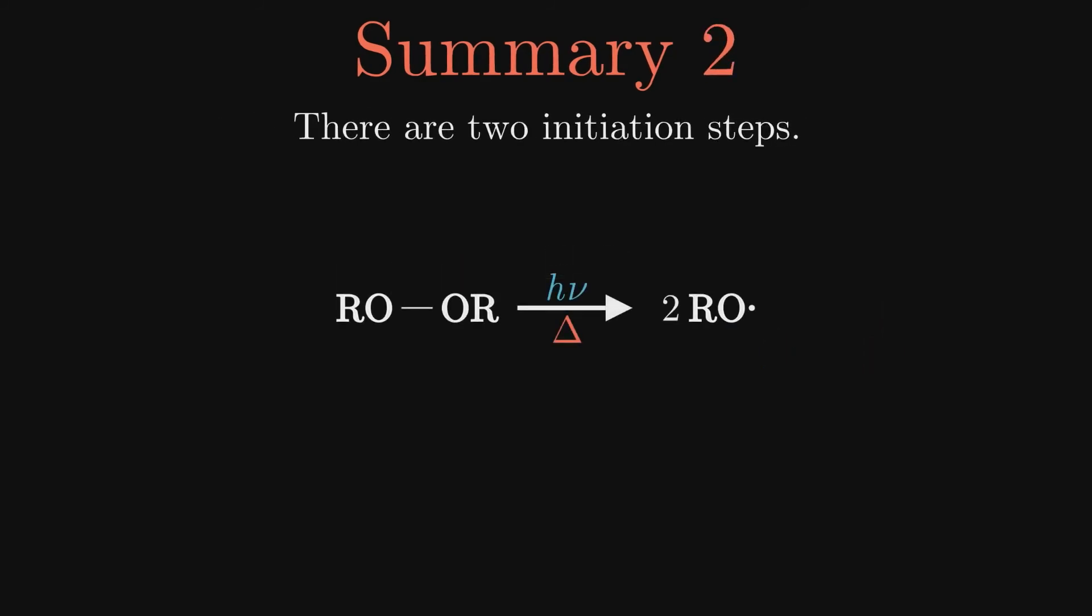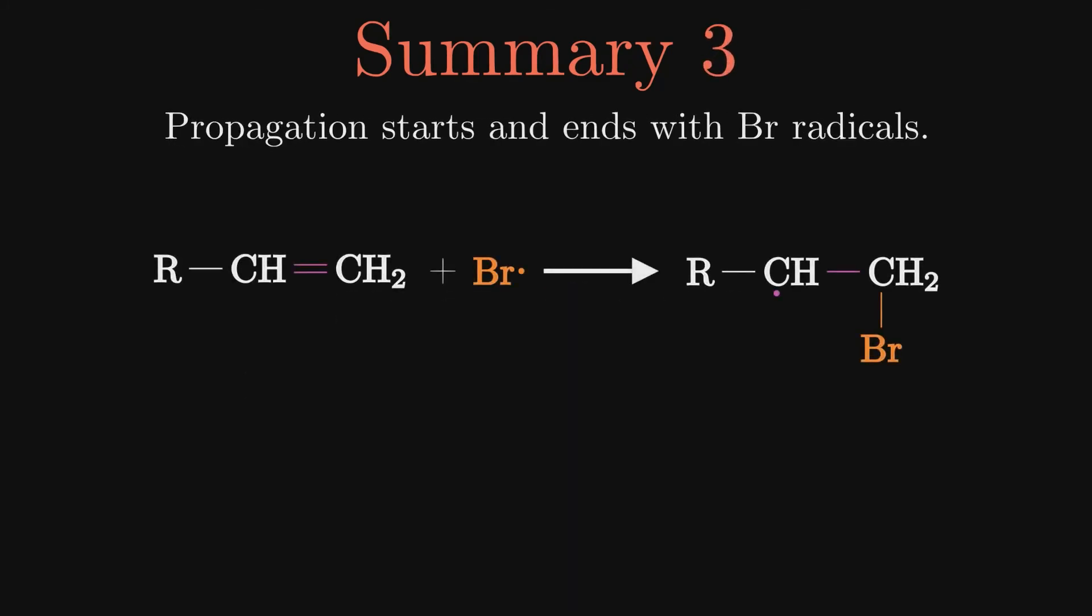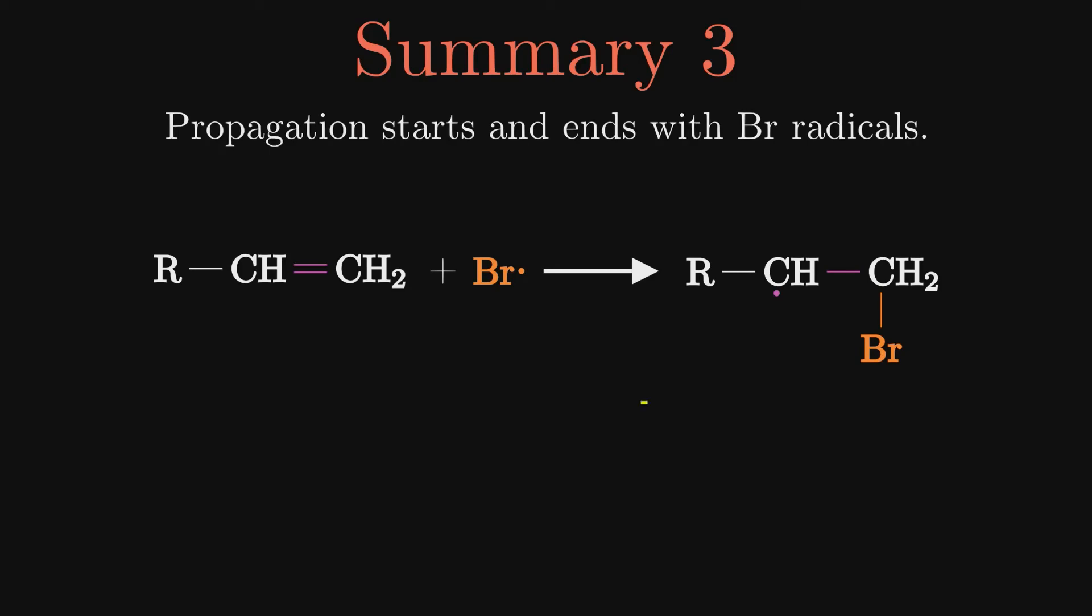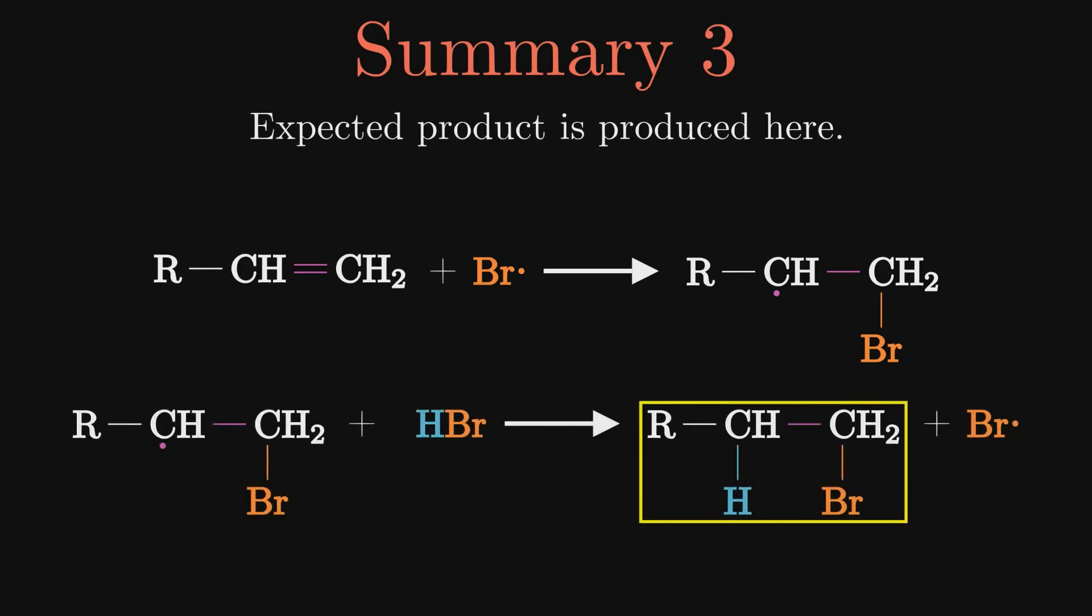The overall process involves initiation steps where the peroxide forms alkoxyl radicals, which in turn form bromine radicals. During propagation, bromine radicals can react with the alkene to form the alkyl bromide radical. The alkyl bromide radical can then react with the hydrogen bromide to form the expected product.